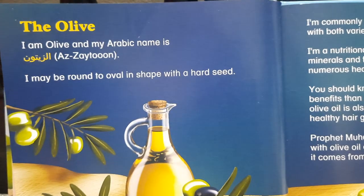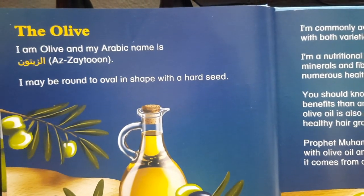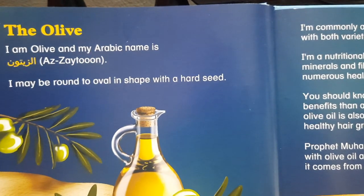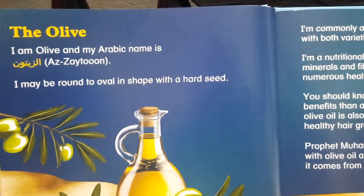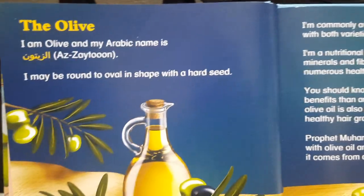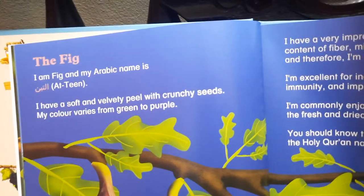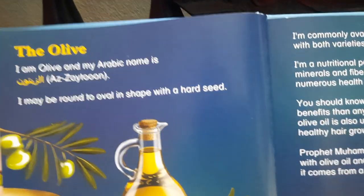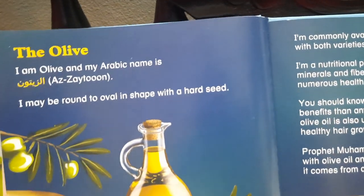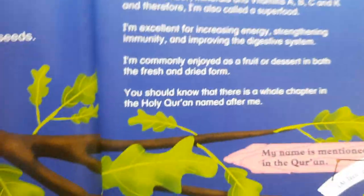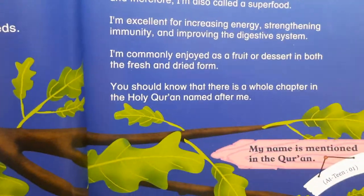Assalamu alaikum warahmatullahi wabarakatuhu. Here we are again with the new name of a fruit or a vegetable which is mentioned in Quran-e-Majid, which is the olive. Last time we have seen the olive as zaitun, so if you see the Surah At-Tin in which the zaitun was mentioned.